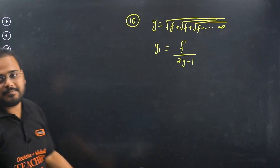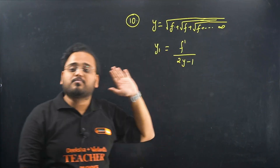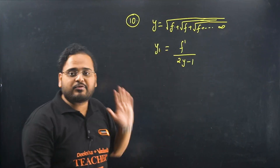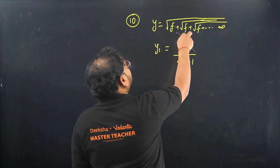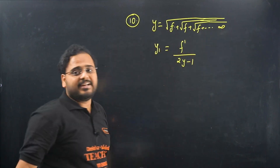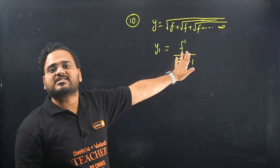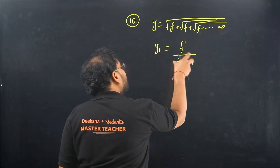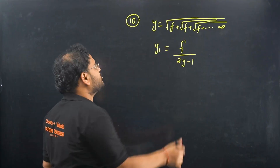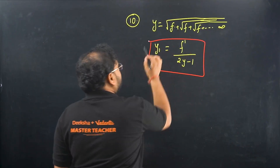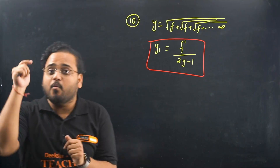Trick 10: For the popular KCET question where y = √(f + √(f + √(f + ... ∞))), the derivative dy/dx = f' / (2y - 1). This is a direct result — simply apply f' divided by (2y - 1) and you have your answer.